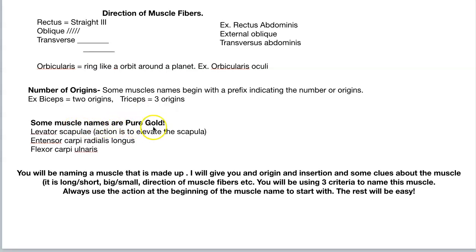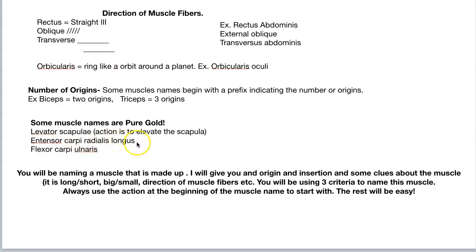I call these 'pure gold' muscle names — they tell you exactly where the muscle is and what it does. Levator scapulae: its action is to elevate the scapula. Great name. Extensor carpi radialis longus: I'm an extensor, extending the wrist, I'm on the radial side, and I'm the longest one. And flexor carpi ulnaris: I'm a flexor, flexing the wrist, and I'm on the ulnar side. These names make sense.